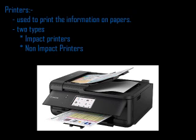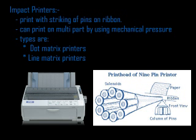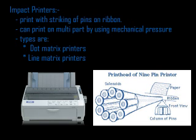The next output device is printers. Printers are used to print information on paper. These printers are divided into two types: impact printer and non-impact printer. Impact printers have a print head with metal pins, with an inked ribbon between the metal pin and the paper. When the metal pin strikes the inked ribbon, it prints on the paper. Impact printers can print on multi-part paper using carbon paper, producing two or three copies. They use mechanical pressure.